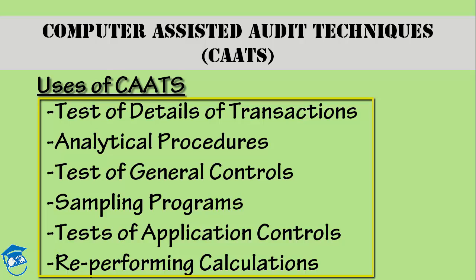Number two is analytical procedures. By analytical procedures I mean: say I want to identify some inconsistencies or significant fluctuations that have happened in your sales records. I can simply go for that analytical procedure with respect to one particular domain area if I have CATs in place. Through a manual system, it's going to be very, very tedious and difficult.